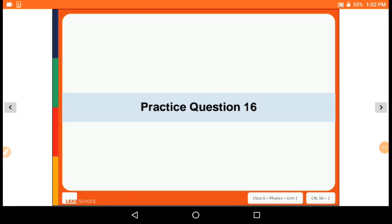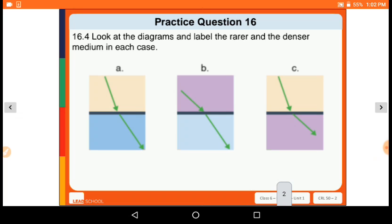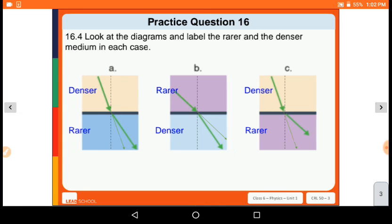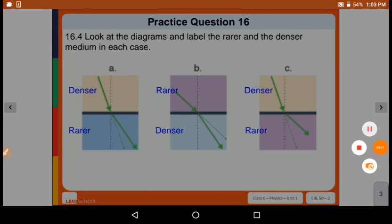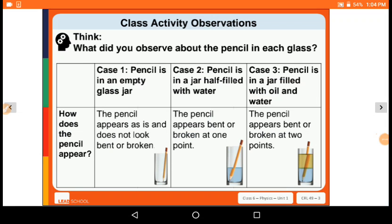Now it's time to solve practice question number 16. Please open your practice question number 16. Look at the diagrams and label the rare and denser medium in each case. So first in case A, there is denser medium or rare medium. Case B, rare or denser or denser or rare - you can see the direction of the light.